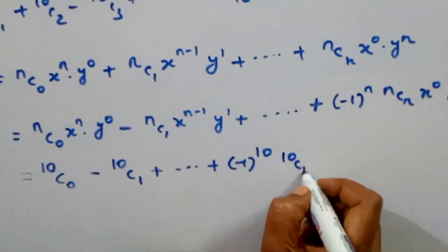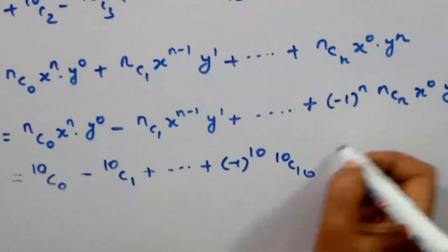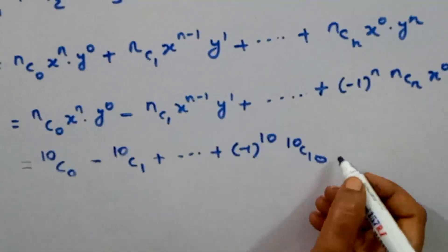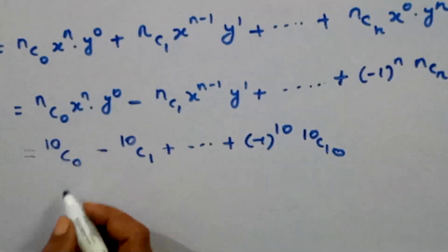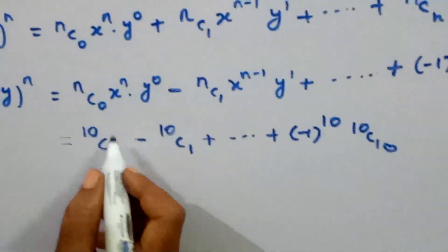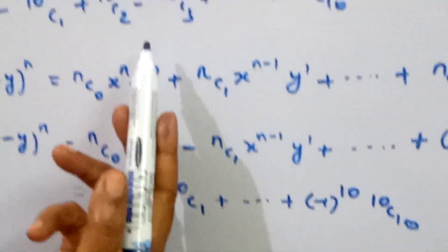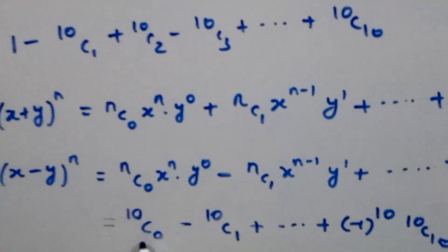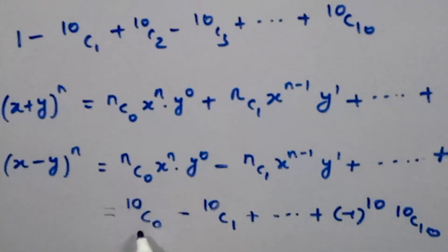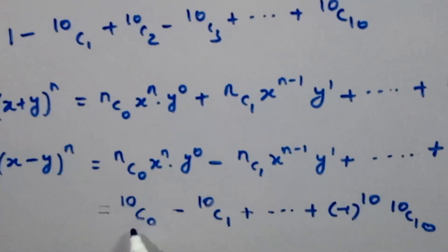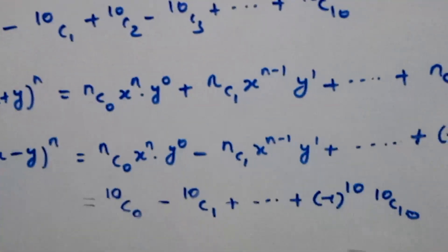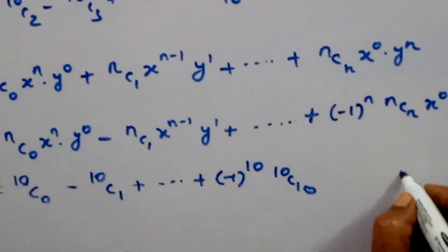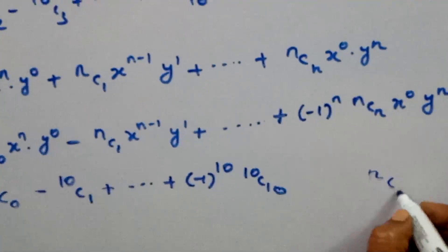The first term is 10c0. Looking at the given series, the first term is 1. So when we evaluate 10c0, we need to find its value. We know how to get the value of 10c0.